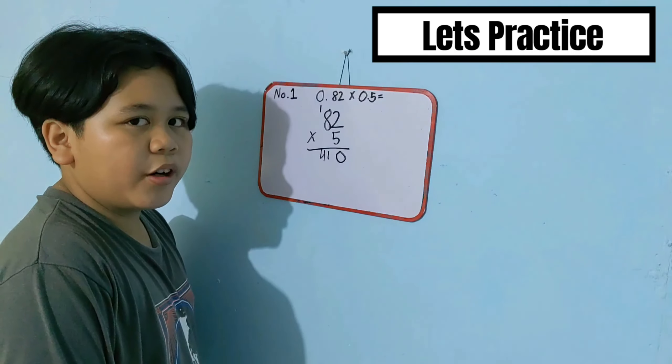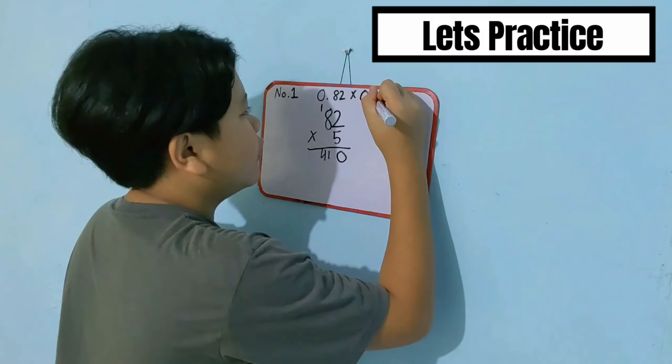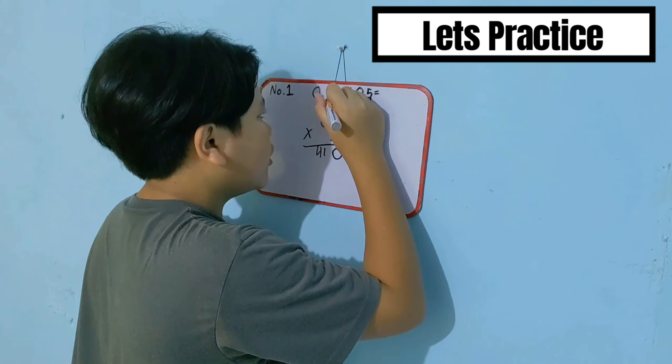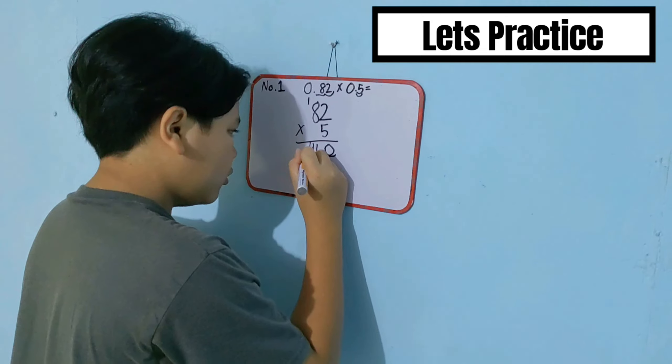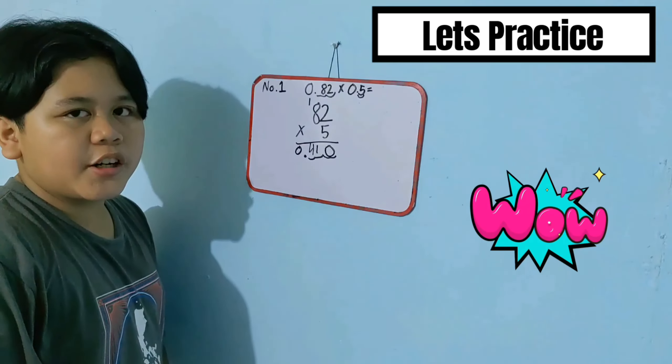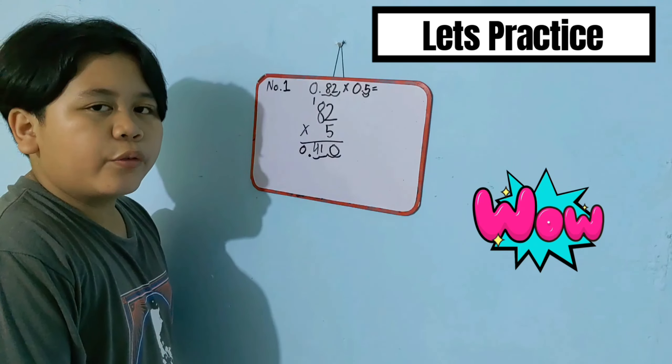Then, go back to the original number and count the digits. 1, 2, 3. The final answer is 0.41, or 41 hundredths.